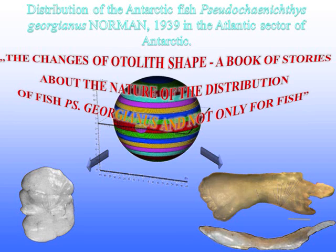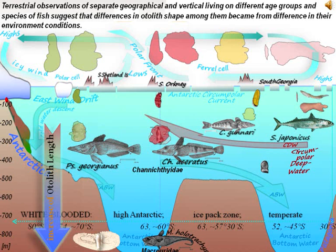Distribution of the Antarctic fish Pseudochaenichthys georgianus Norman, 1939, in the Atlantic Sector of Antarctic. The Changes of Otolith Shape — a study of the nature of the distribution of fish Georgianus and related species. Terrestrial observations of separate geographical and vertical living in different age groups suggest that differences in otolith shape among them arose from differences in their environmental conditions.